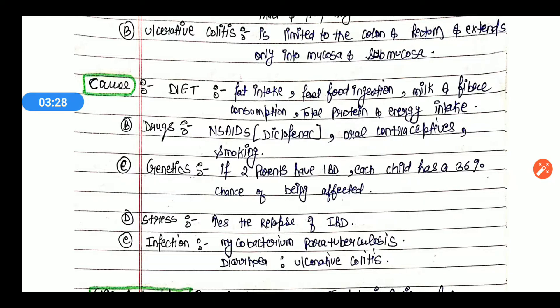We have read about NSAIDs in the ulcer portion, that NSAIDs cause ulcers. In IBD, NSAIDs also play a role as we've seen that due to inflammation, ulcers are caused. So this is also an inflammatory condition. So drugs like NSAIDs can also be responsible for causing IBD. Other drugs could be oral contraceptives and smoking.